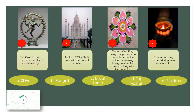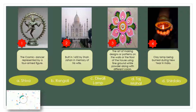The cosmic dancer represented by a four-armed figure. Your time starts now. The correct answer is letter A, Shiva.